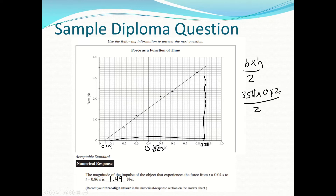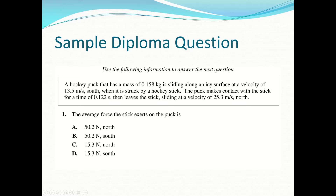A hockey puck with a mass of 0.185 kilograms is sliding along an icy surface with a velocity to the south. When struck by a hockey stick, the puck leaves the stick sliding at a velocity to the north. I'm going to make south negative and north positive. So the initial velocity is negative, and the final velocity is positive.